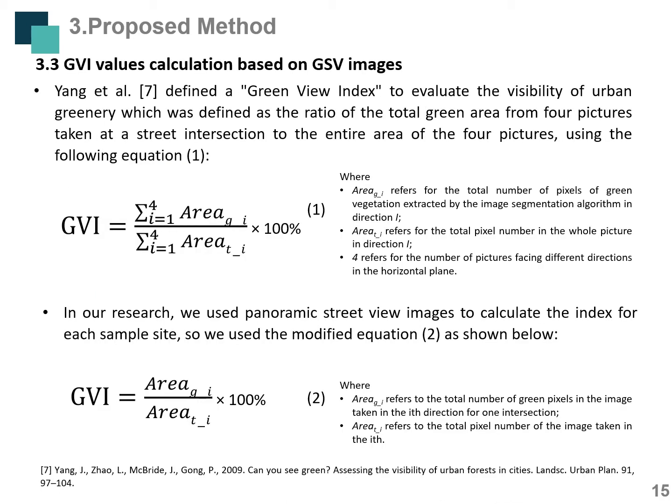The third step is GVI value calculation based on GSV images. Yang et al. defined a Green View Index to evaluate the visibility of urban greenery, defined as the ratio of the total green area from four pictures taken at a street intersection to the entire area of the four pictures using a specific equation. In our research, we propose to use panoramic street-view images to calculate the index for each sample point, and we modified the calculation equation accordingly.